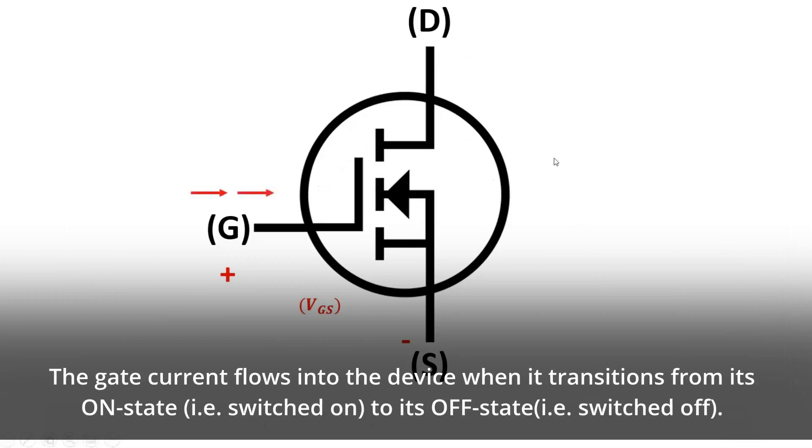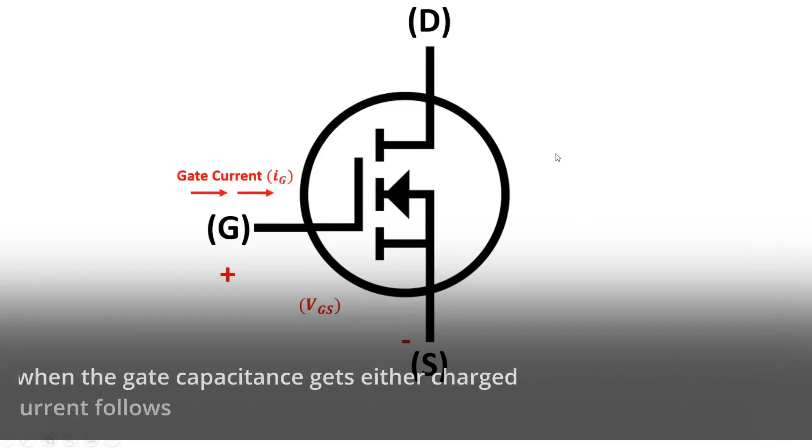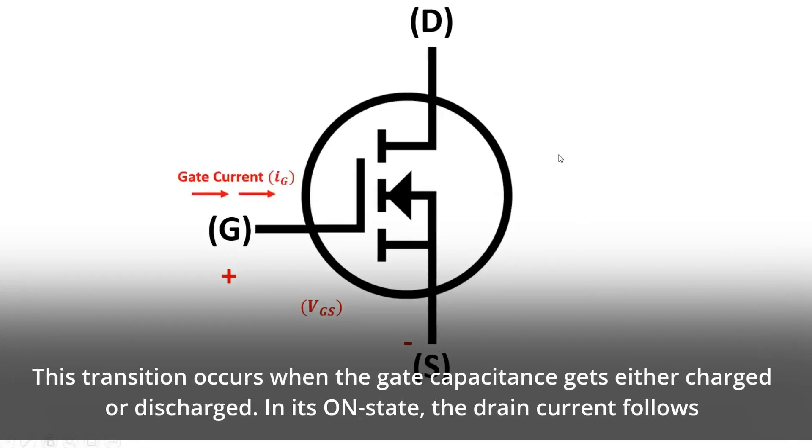The gate current flows into the device when it transitions from its on-state (i.e. switched on) to its OFF state (i.e. switched off). This transition occurs when the gate capacitance gets either charged or discharged.